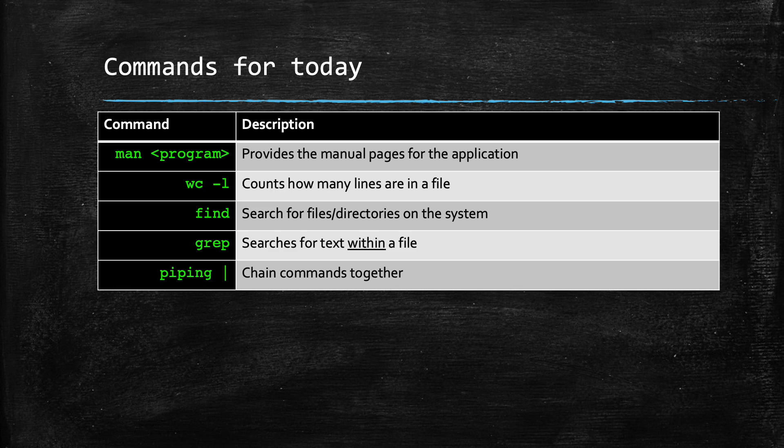These are a couple of the programs that we're going to be going over today. We'll go over how to use manual pages for programs, how to count lines in programs, and then how to search the file system for files and directories on the system. We're also going to use grep to search within files, and I'll go over something called piping.